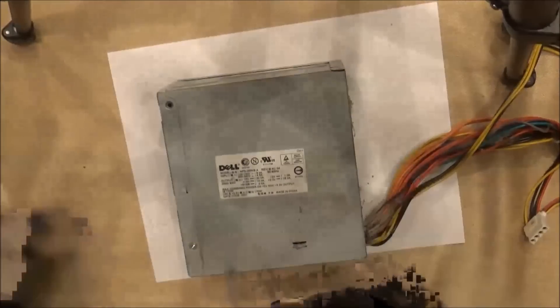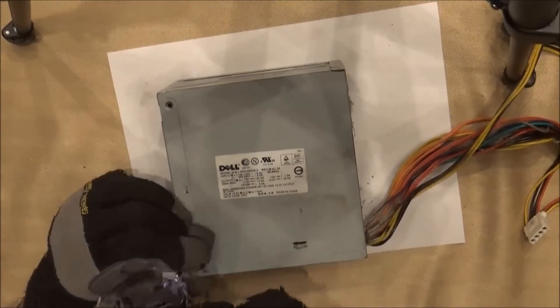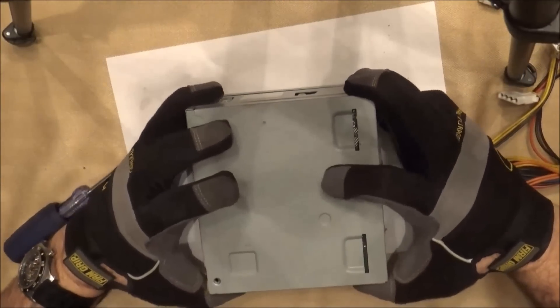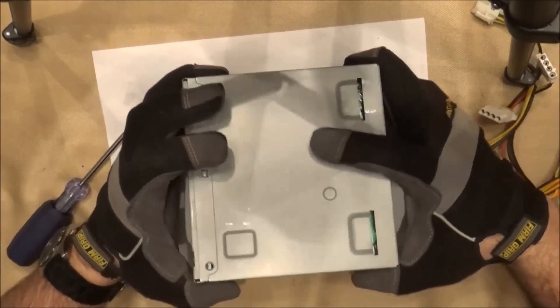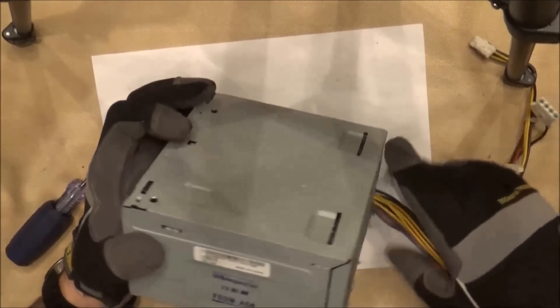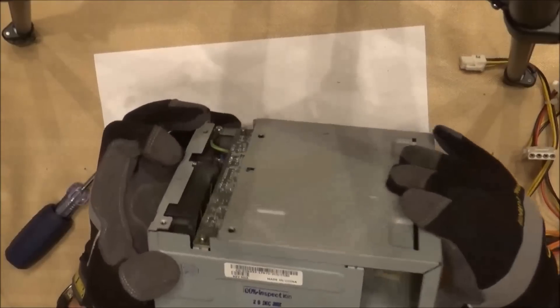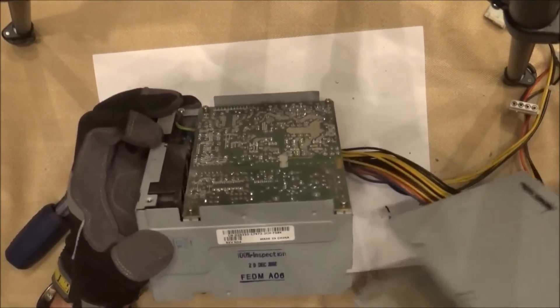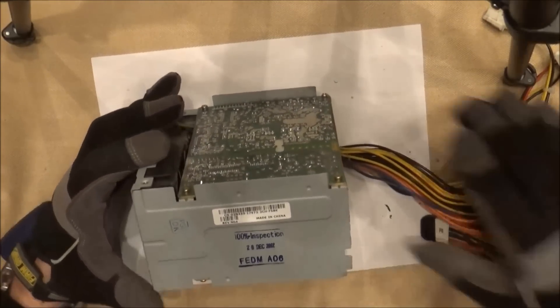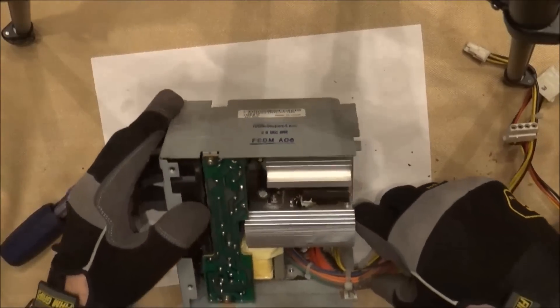Here, I'm taking the screws out of the power supply so I can separate the box. Once the screws are out, the box just slides apart. Be careful, some of the wires can be connected to the box, so if you have a problem with them coming apart, make sure nothing is still connected.